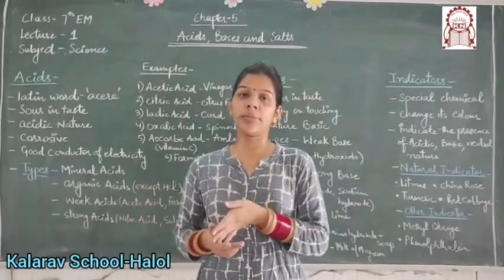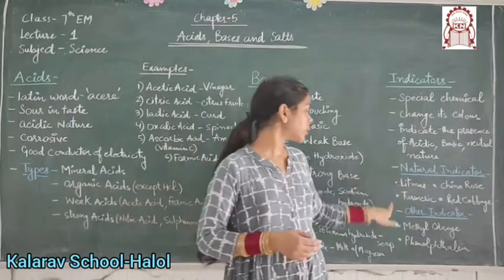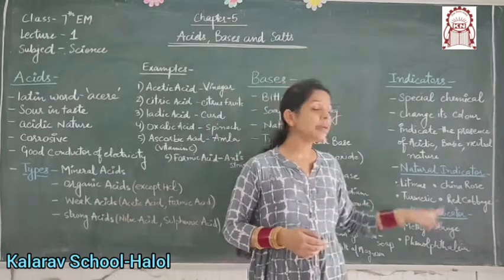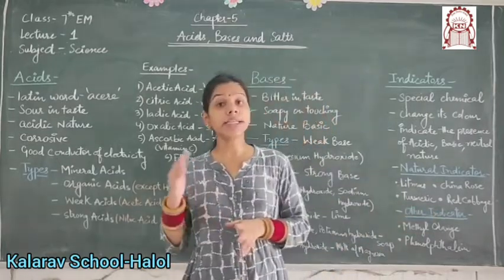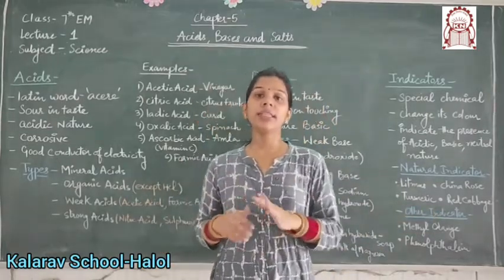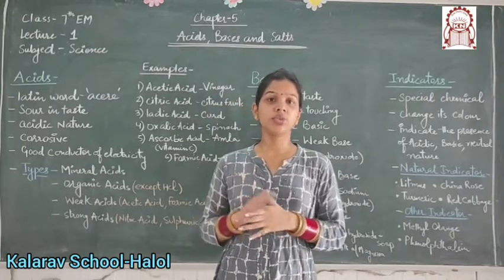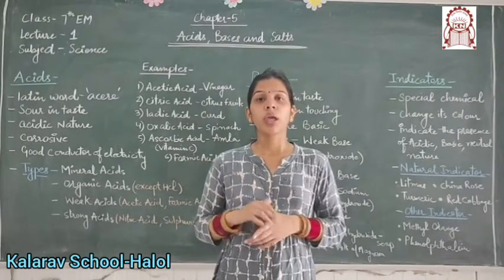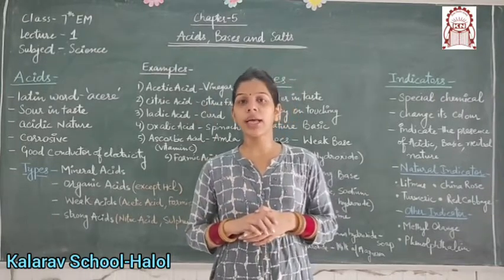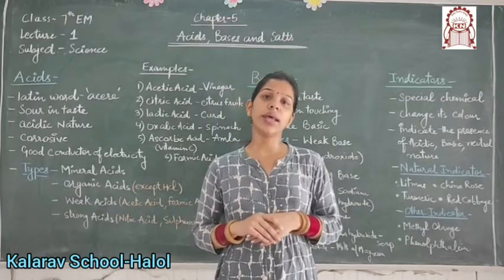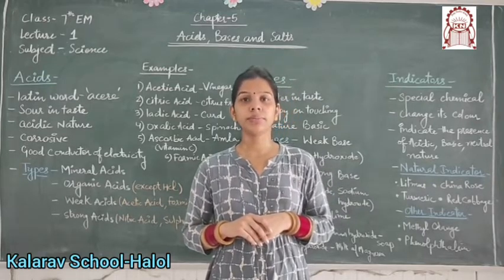Other indicators include methyl orange and phenolphthalein. I will discuss all the types of these indicators in the next lecture. I will attach the PDF file along with this video. You can write the work in your classwork as well as homework workbook. Thank you.